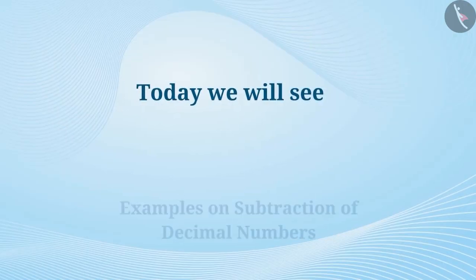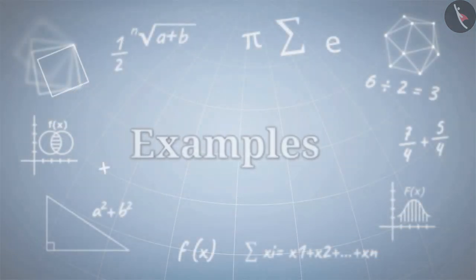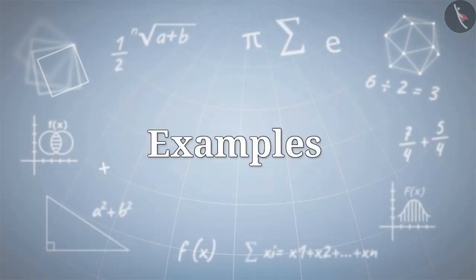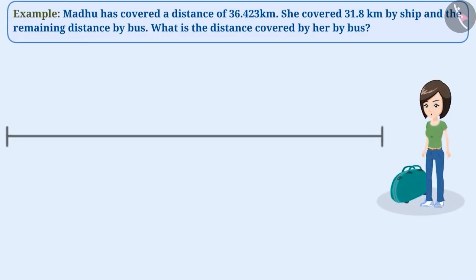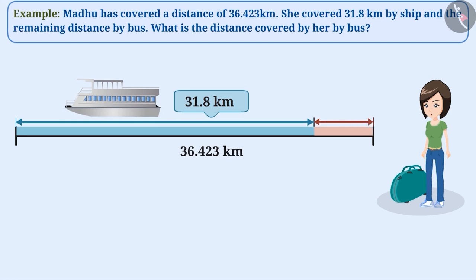Today, we will see examples on the subtraction of decimal numbers. Madhu has covered a distance of 36.423 km. She covered 31.8 km by ship and the remaining distance by bus. What is the distance Madhu had covered by bus?